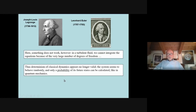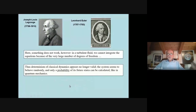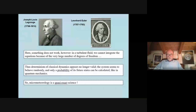The consequence is that the determinism of classical dynamics appears to be no longer valid — the systems seem to behave randomly. You can calculate only the probability of future states of the system, a little bit like in quantum mechanics. You cannot determine exactly where your air particle will be after five minutes. So we can say that micrometeorology is not an exact science — it's a quasi-exact science. That's what's exciting.